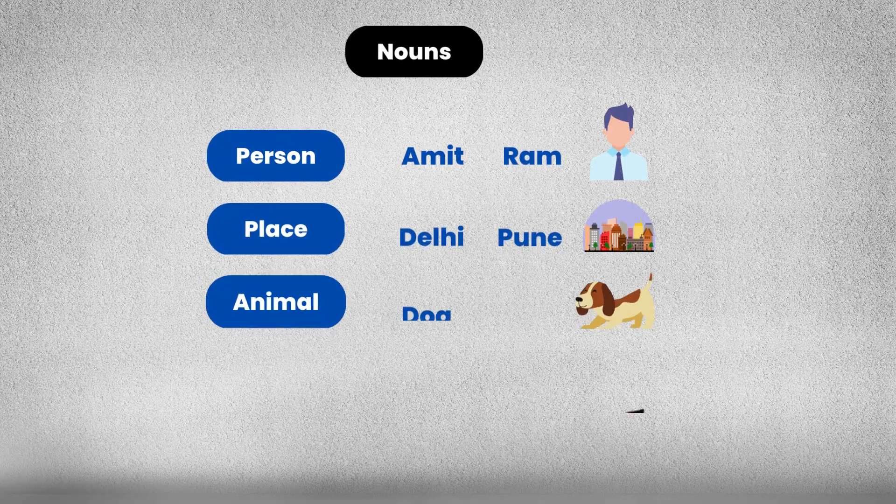As an example for name of a person we will take Amit and Ram. For name of place we will take Delhi and Pune. For name of animal we will take the example of dog. For name of thing we will take chair.